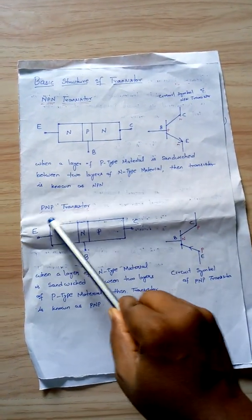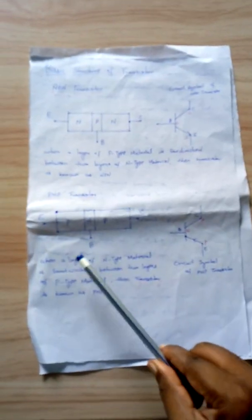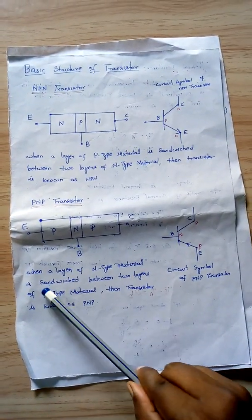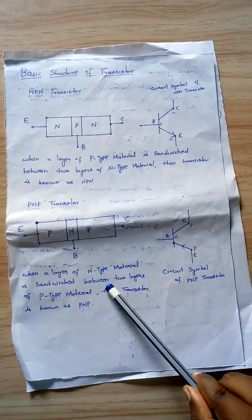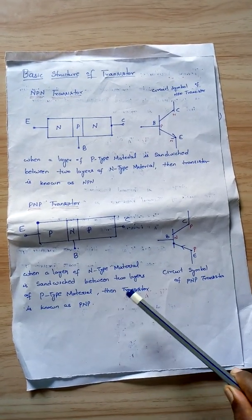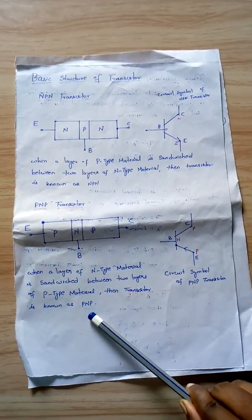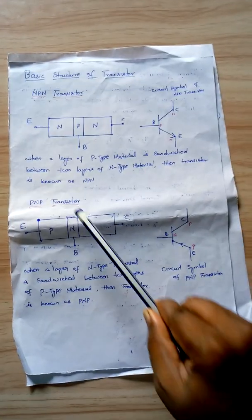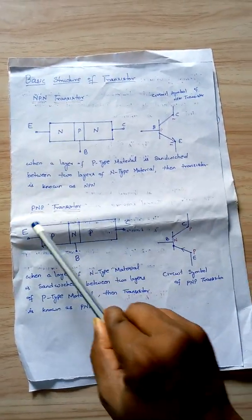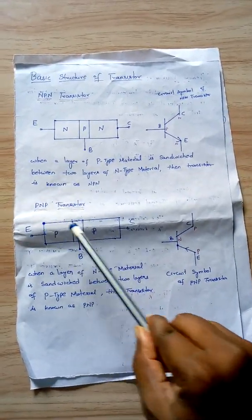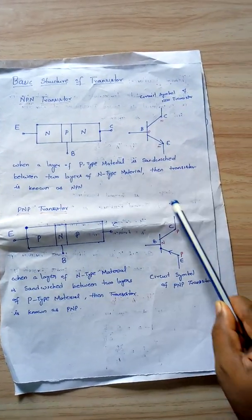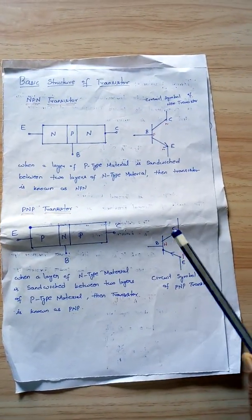For a PNP transistor, when a layer of N-type material is sandwiched between two layers of P-type material, we can call it a PNP transistor. This is the circuit symbol for the PNP transistor.